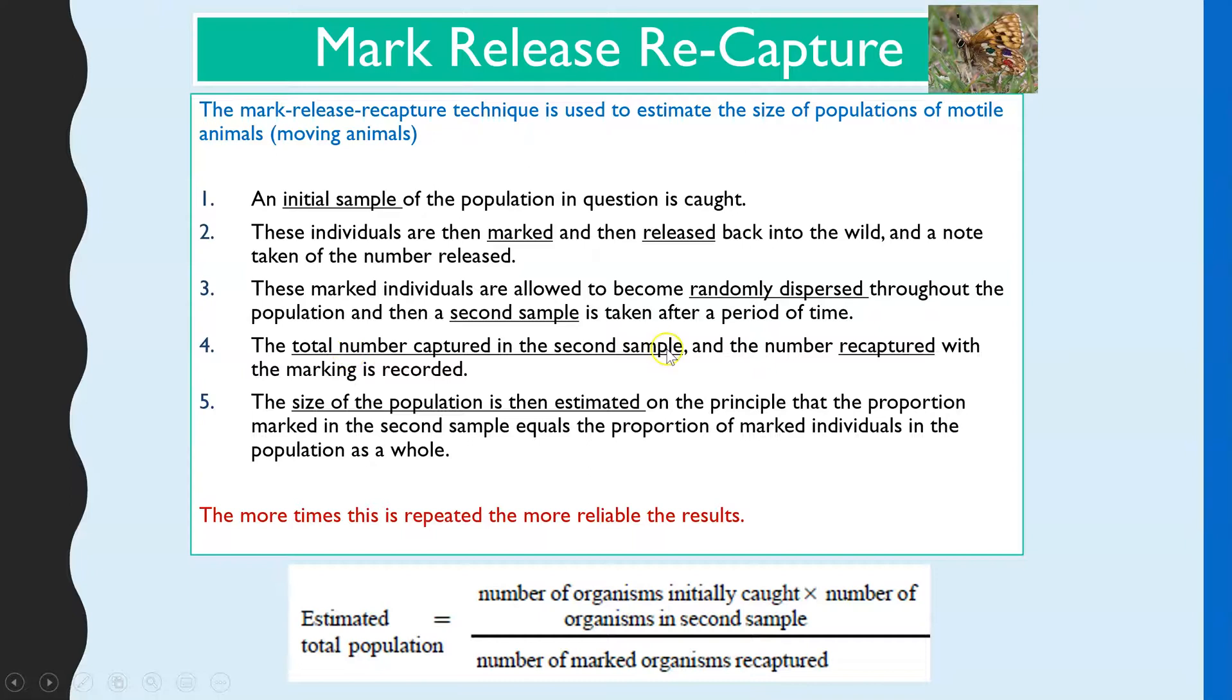Then you take a second sample, and from that sample you'll be counting how many you were able to capture and how many within that sample you'd previously caught. So those would be the ones that have the marking on, and then from that you can use this equation here to create an estimate.